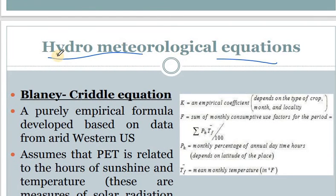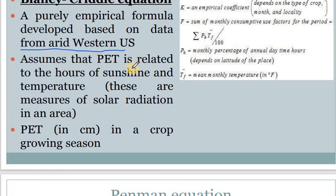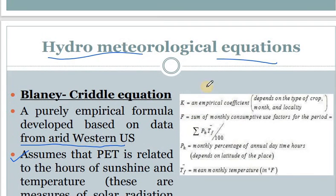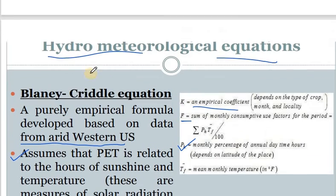Then there is the hydrometeorological equation — the Blaney-Criddle equation, a purely empirical equation developed based on data from the arid western US. It assumes that potential evapotranspiration (PT) is related to hours of sunshine and temperature during a crop growing season. The equation uses K, an empirical coefficient depending on the crop and locality, and F, the sum of monthly consumptive use factors, calculated as the summation of (p·T̄/100), where p is the monthly percentage of annual daytime hours and T̄ is the mean monthly temperature.